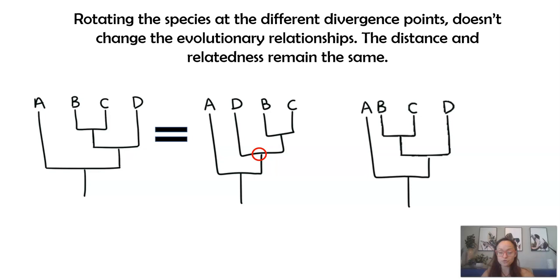What happens is you can twist at that branch point in any direction, and this is going to mean the same thing. All I did was rotate it. So, the diagram on the left and the diagram on the right show the same evolutionary history because the branch points are in the same relative locations.